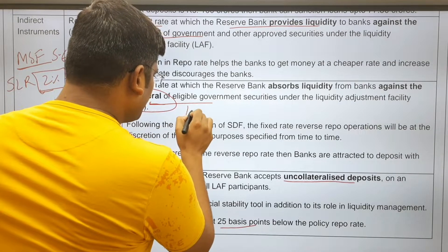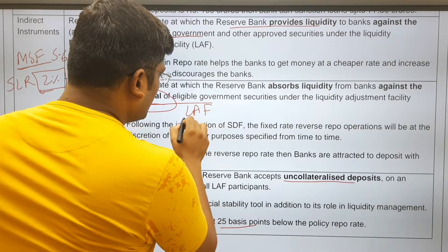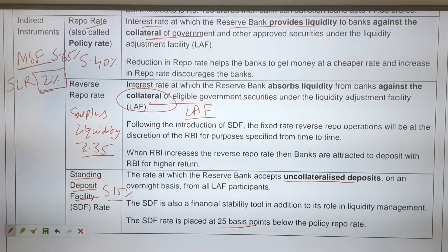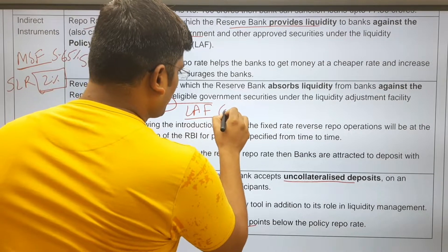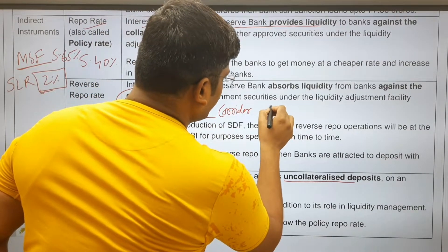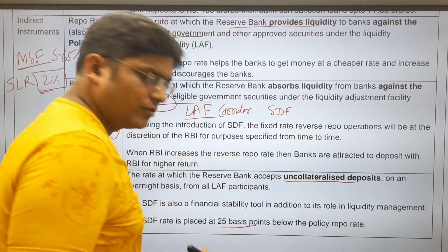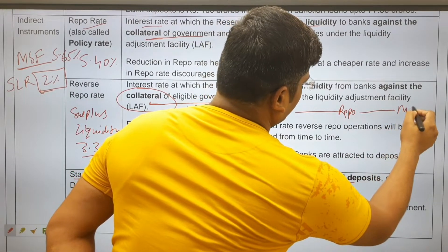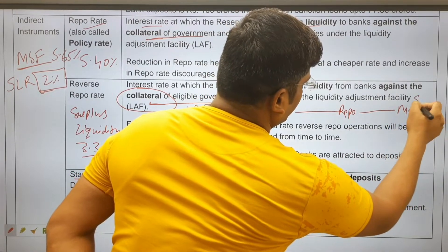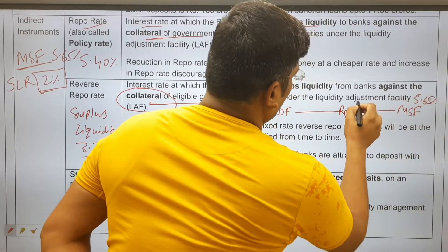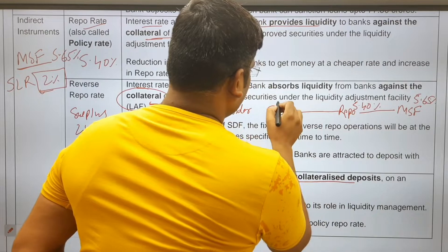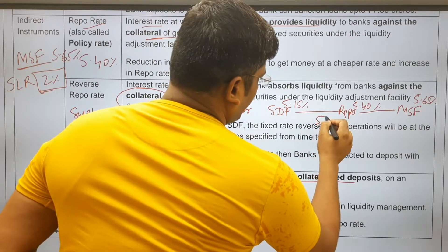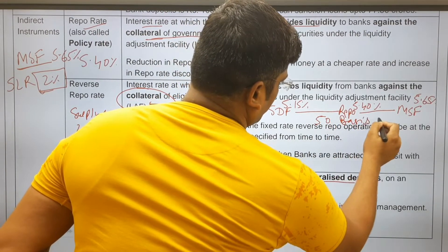Liquidity Adjustment Facility (LAF) consists of repo, reverse repo, Standing Deposit Facility (SDF), and MSF. The LAF corridor has SDF as the lower ceiling and MSF as the upper ceiling, with repo in the middle. MSF rate is 5.65%, repo is 5.40%, and SDF is 5.15%. The LAF corridor is 50 basis points wide.